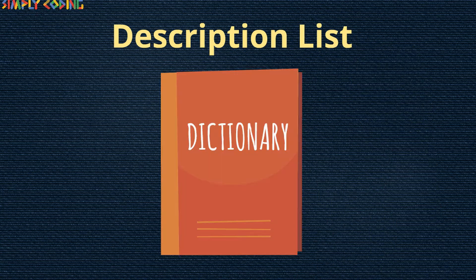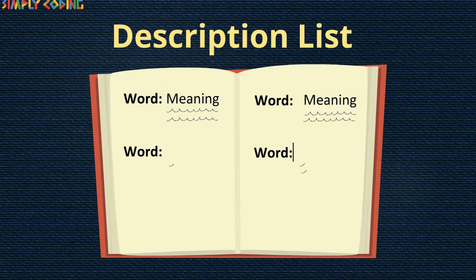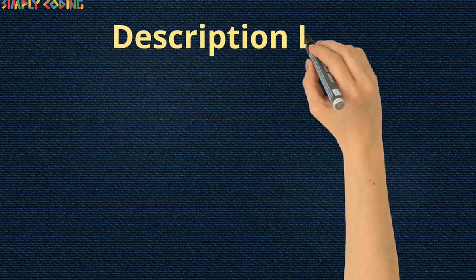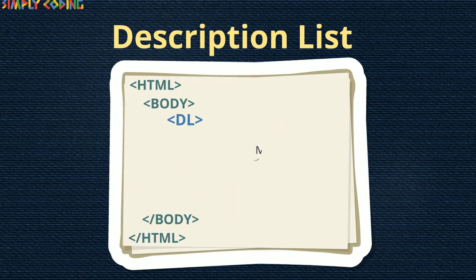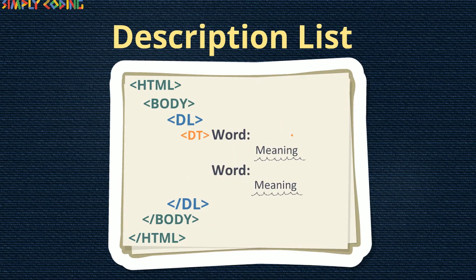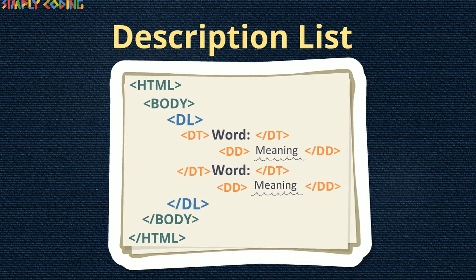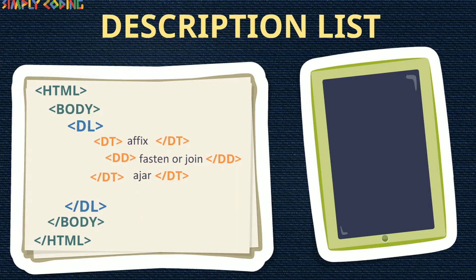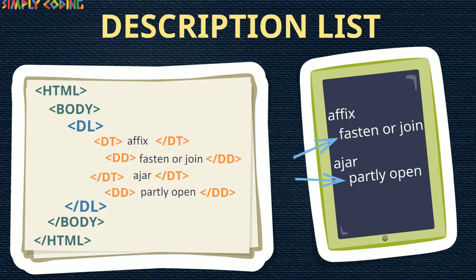Next, we will cover HTML description or definition list. It will display elements in definition form, like in a dictionary. The description list is enclosed within a dl tag. Each list item has a dt tag to define the data term and a dd tag to define the data definition or description. As you can see in this example, the definition is displayed on a new line and is indented.